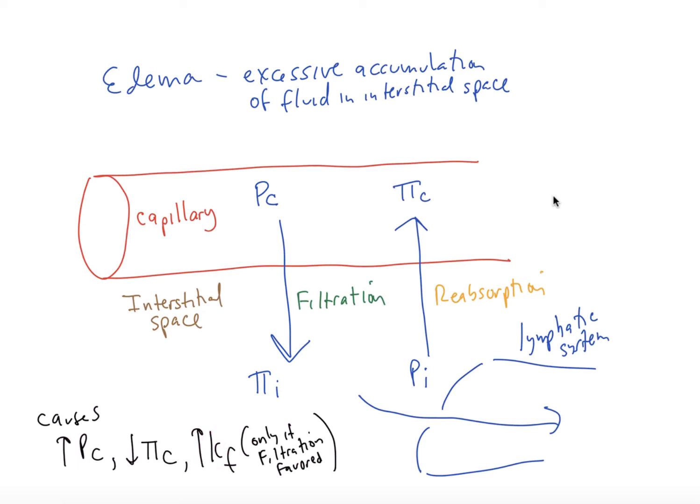And then finally, I could have some blockage in the lymphatics. A blockage here would prevent the leaving of the fluid out of the interstitial space, and I have accumulation of fluid that way.